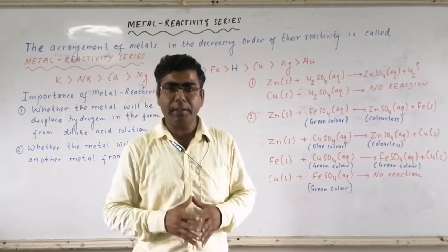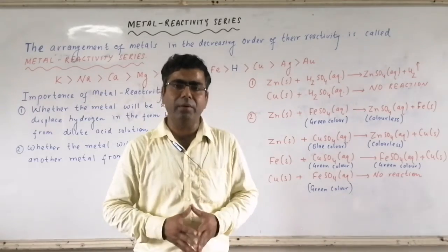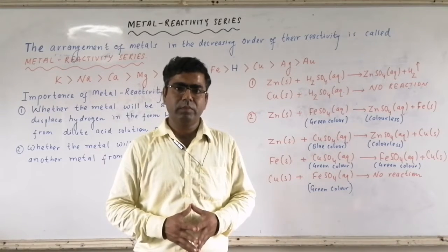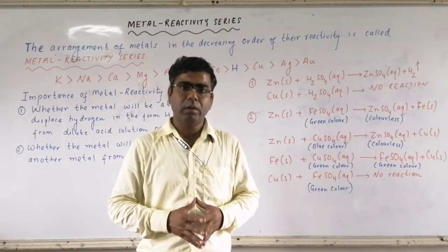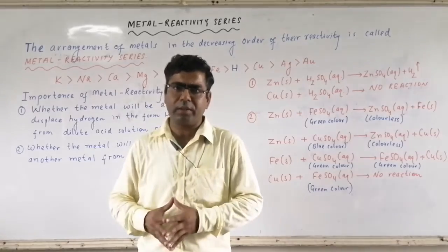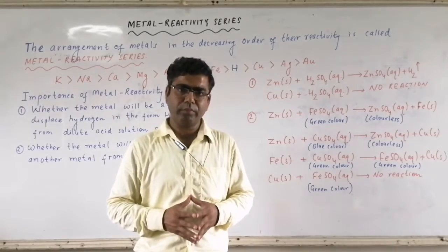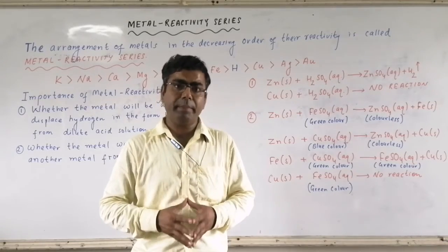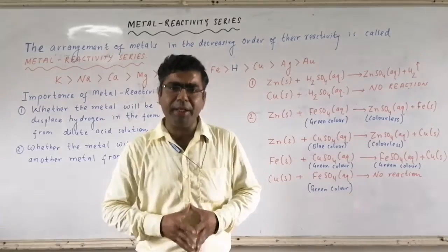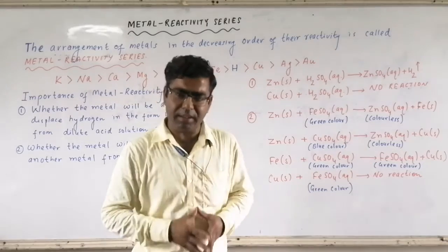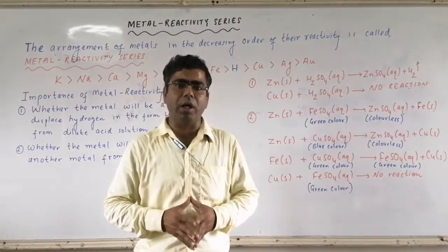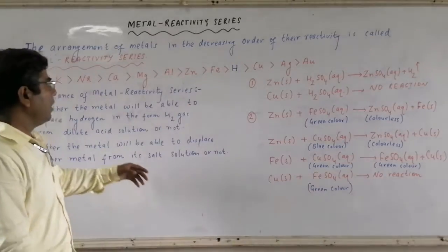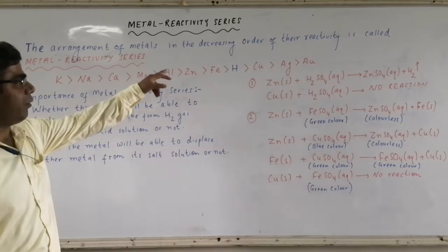Hence we can say that all metals do not have the same reactivity — some react faster while others react at a moderate or slow rate. Based on their reactivity, we can arrange metals in the form of a series, and this series is called the metal reactivity series. The definition is: the arrangement of metals in the decreasing order of their reactivity.